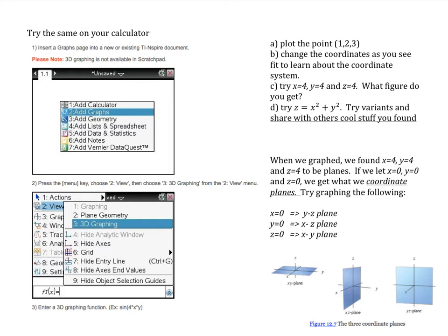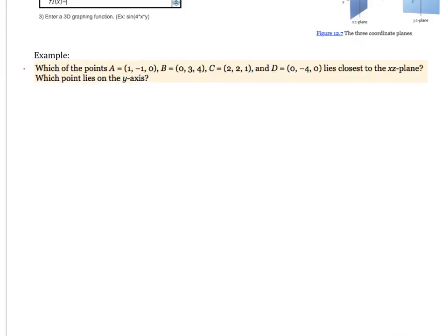And then here, if I have my y equal to 0, then that would be the XZ plane. And then the last one is x equal to 0 would be this one right here, which would be the YZ plane. So I have these in different orders, but that one's there. So if we look at this example, which of these points lies closest to the XZ plane? And so if you think about that, y equal to 0 gives me the XZ plane, so we're probably looking at the y coordinates. And then which point lies on the y axis?